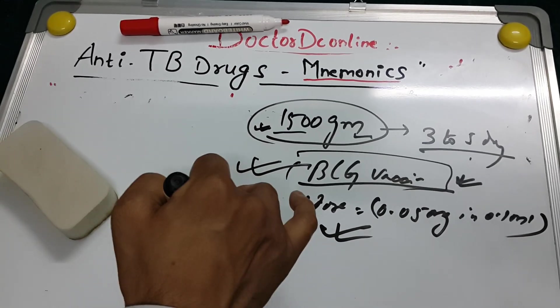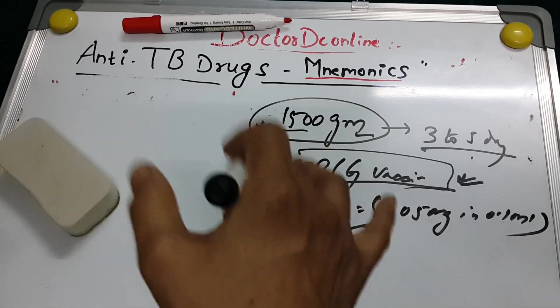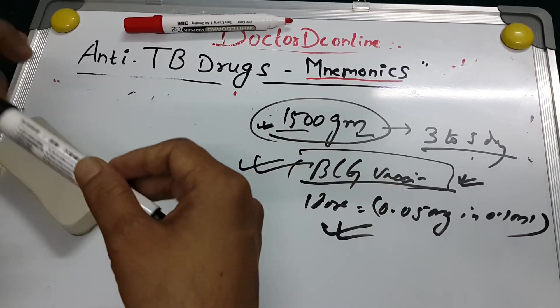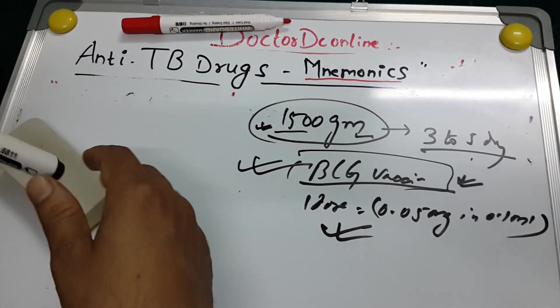Those are the main anti-tuberculosis drugs — first-line and second-line — along with basic information about tuberculosis. Thank you.